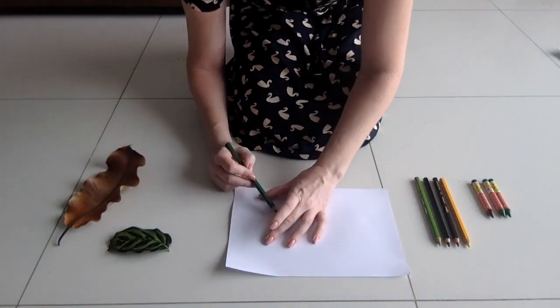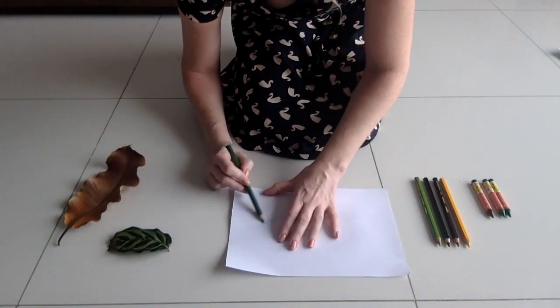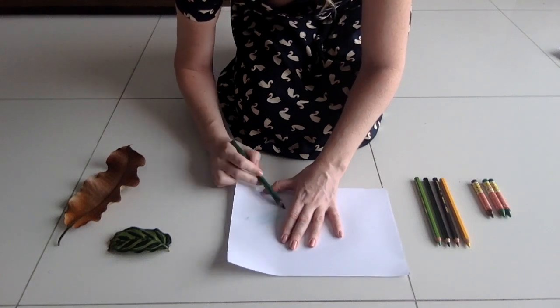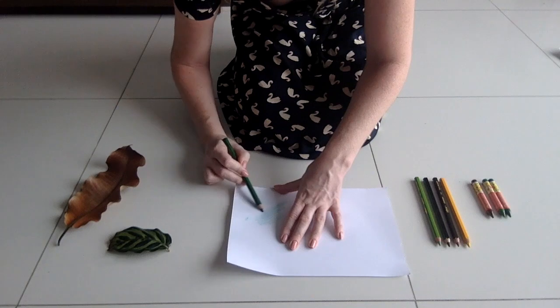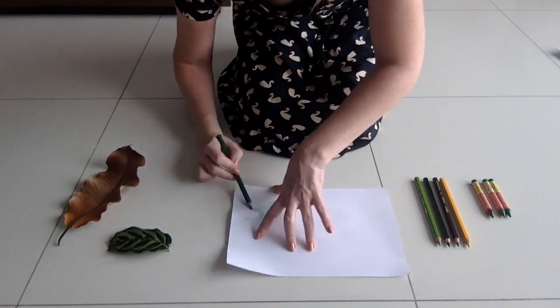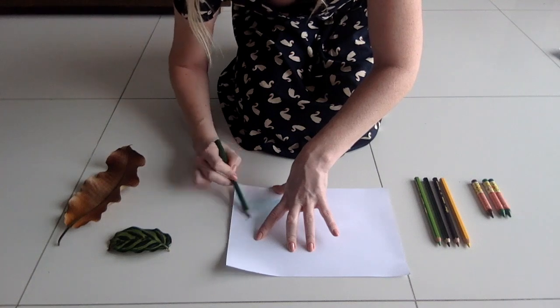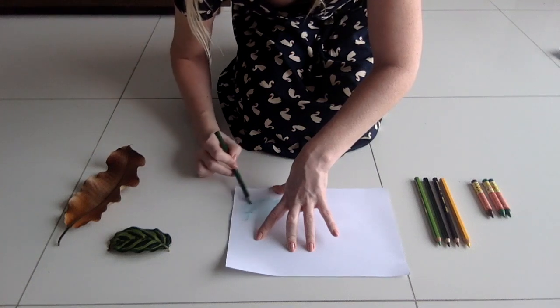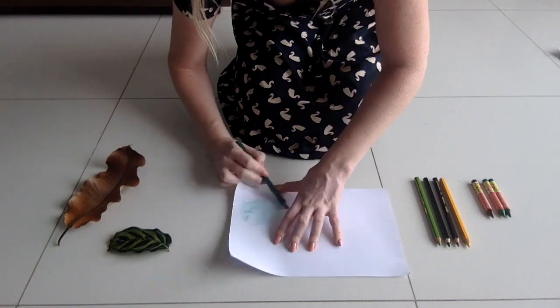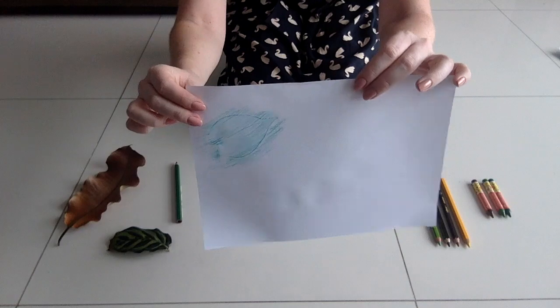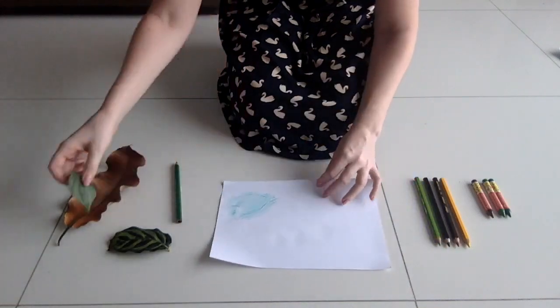Don't press too hard, otherwise you won't see the pattern of the leaf. Make sure you color all over so it's nice and colorful and there's no white left. You can see the outline of the leaf and the vein in the middle.